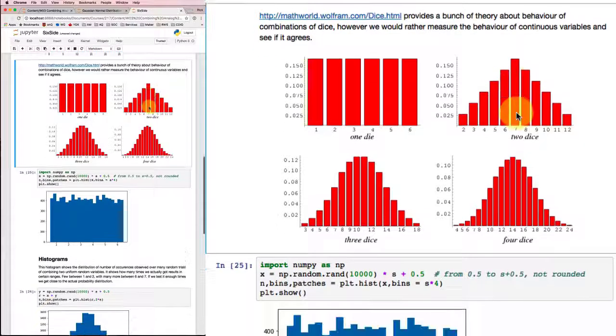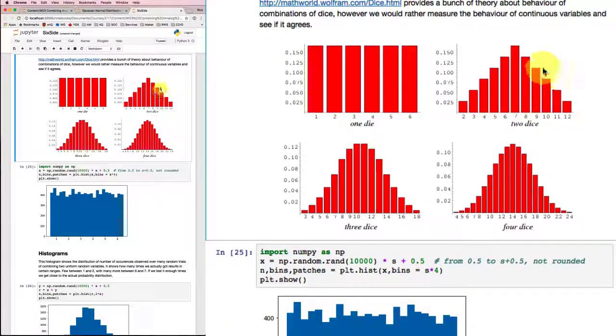But what if I combine them together? What if I rolled more than one die at a time? With one die, I expect this uniform distribution. And if you go to this link, there's a whole lot of theory about the behavior of combinations of dice in probability theory. But we're going to look at this from a simulation standpoint, because we want our statistics to be backed up by some measurements to make sure that they make sense, in addition to being theoretically correct.